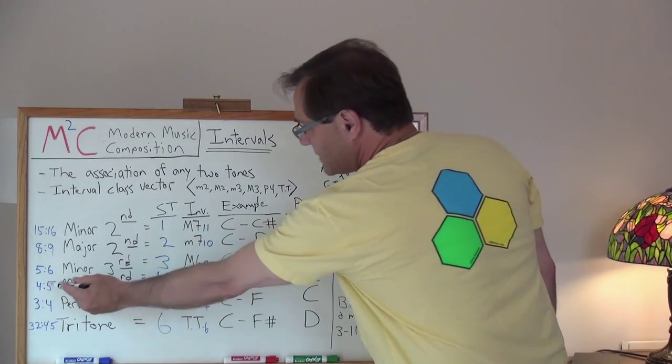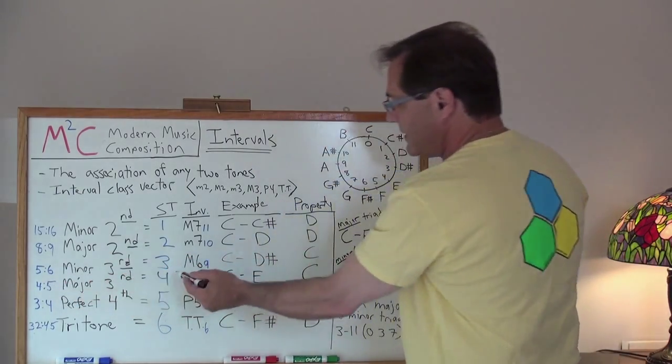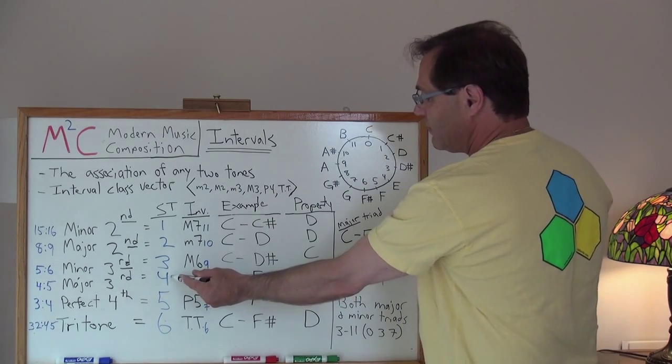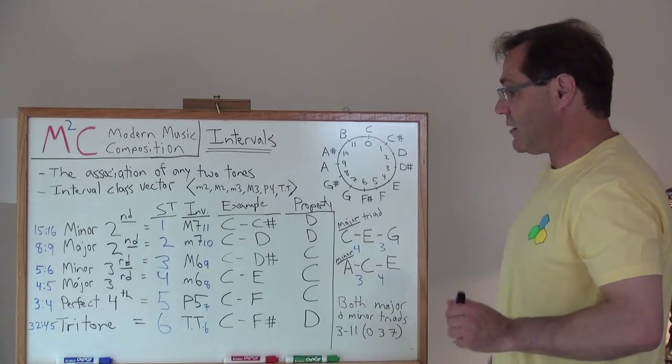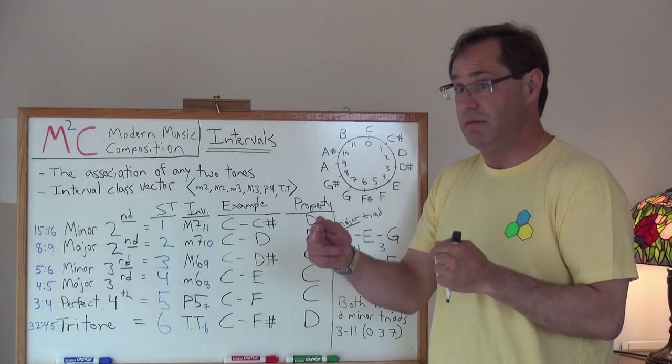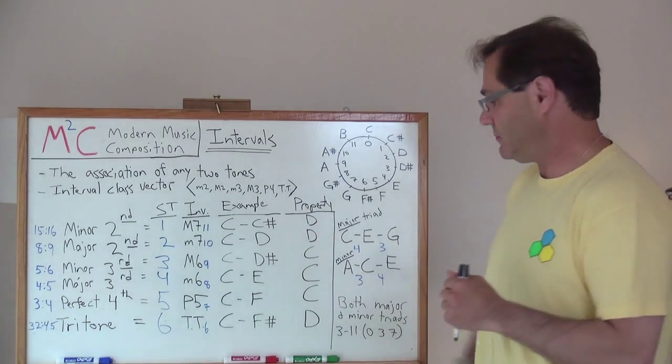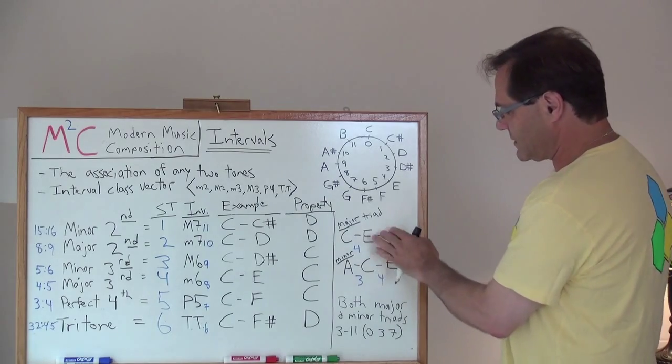We'll go now to a major third. Its ratio is four to five. It is four semitones in the interval. And it would be like C to E. That would be the beginning of building up a C major triad. Just like what I've got here. We'll get to this in a minute.